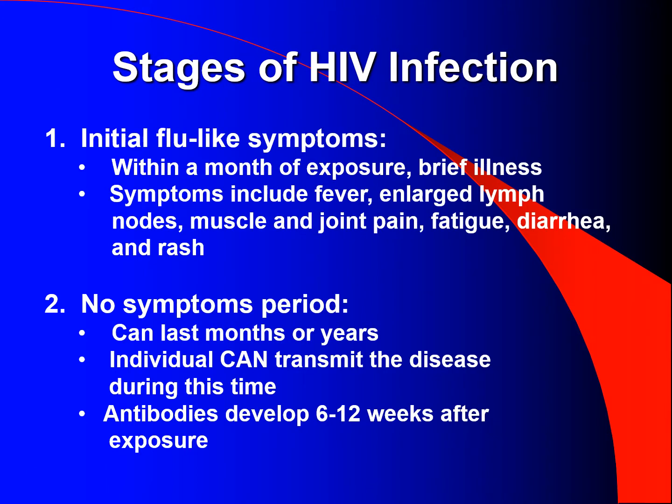Stages of HIV infection. Stage 1: Initial flu-like symptoms within a month of exposure — brief illness. Symptoms include fever, enlarged lymph nodes, muscle and joint pain, fatigue, diarrhea, and rash. Stage 2: No-symptoms period. Can last months or years. The individual can transmit the disease during this time.